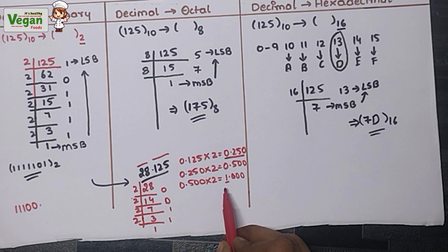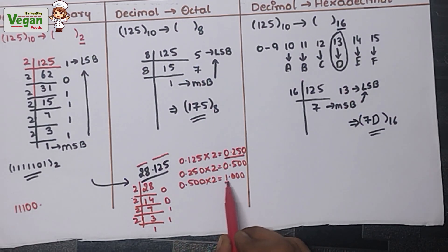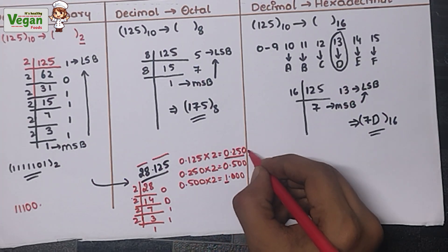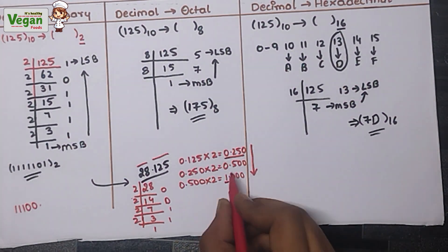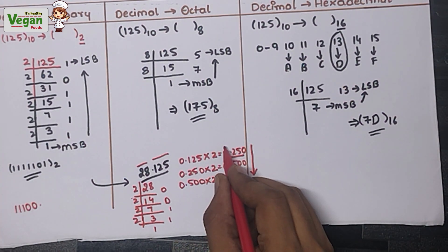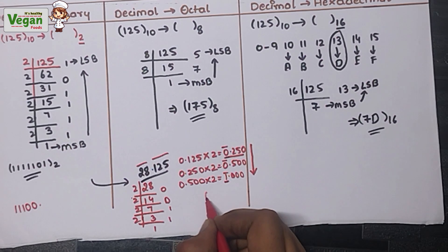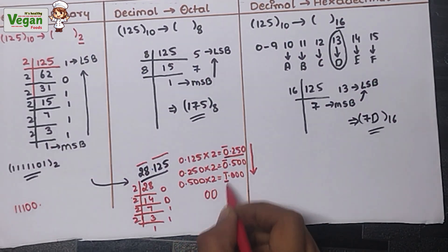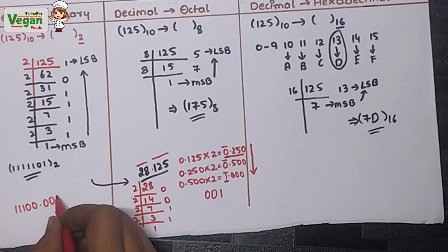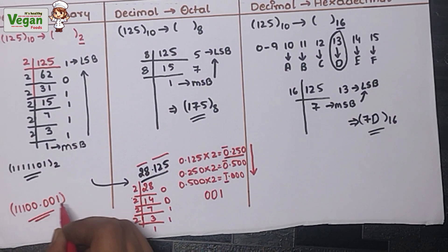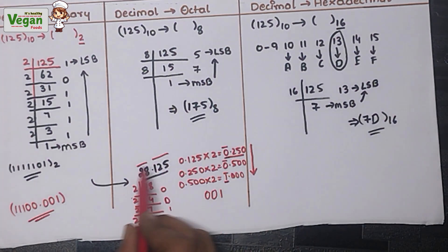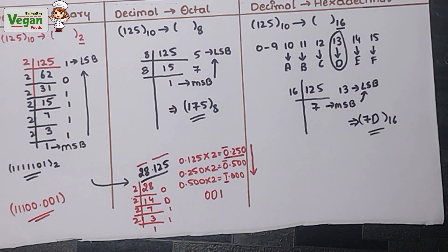We got 1, which is greater than 0, so we stop. Reading the digits before the decimal from top to bottom: first 0, then 0, then 1 — giving 0.001. So the binary representation of the fractional part 0.125 is 0.001, and the same process applies for octal and hexadecimal conversions.